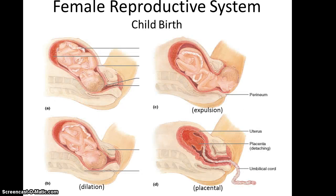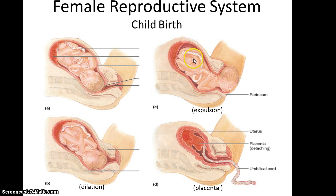During childbirth, dilation refers to dilation of the cervix, expanding to allow the baby to be expelled. Contractions of the uterus lead to expulsion of the baby. Finally, there is placental expulsion afterward, often called the afterbirth.